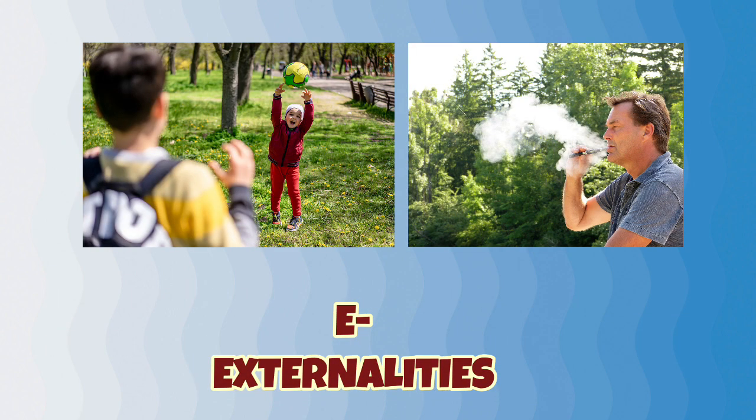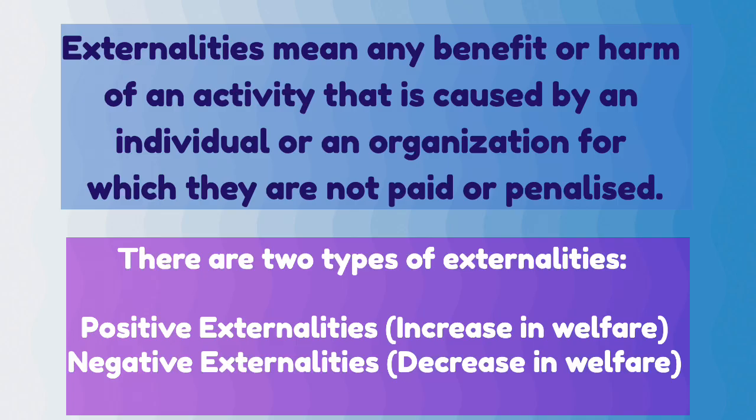E stands for externalities. Externalities means any benefit or harm of an activity caused by an individual or an organization for which they are not paid or penalized. There are two types: positive externalities, which are activities that benefit other people and result in an increase in welfare, and negative externalities, which are activities that harm other people and result in a decrease in welfare.